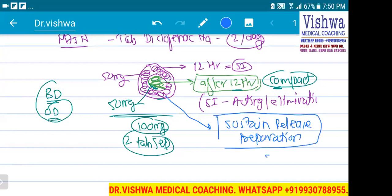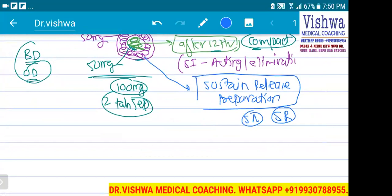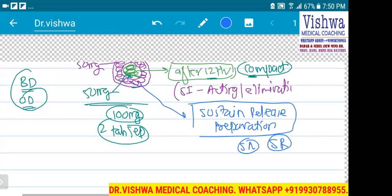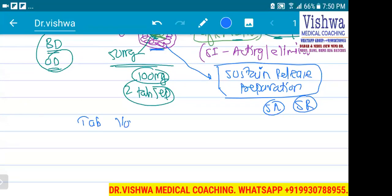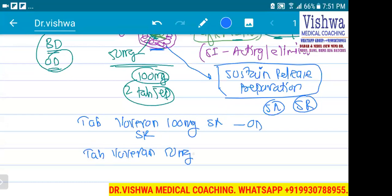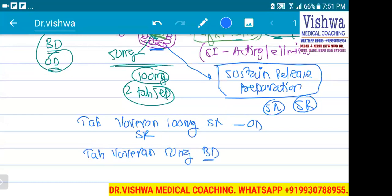Remember any tablet that has SR in front of it — SR stands for Sustained Release. It is also mentioned in some books as Controlled Release. What we have done is made the tablet with multiple layers, each dissolving at 12-hour intervals. For example, the same tablet Boveron is also available as 100 mg Sustained Release — called Boveron SR — and it is taken once in a day. Whereas the regular Boveron tablet is 50 mg taken twice in a day. So we convert twice-a-day dosing into once-a-day by using the SR form.